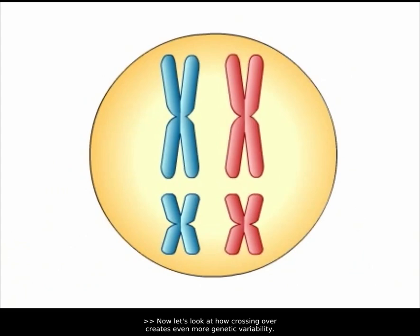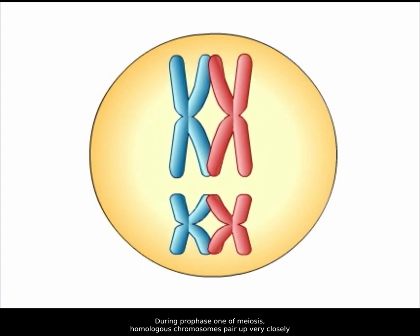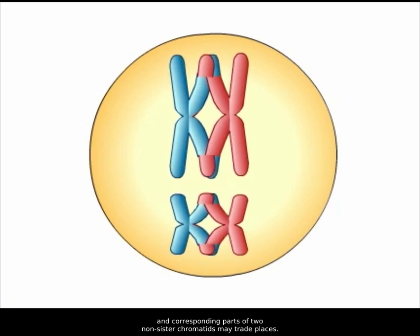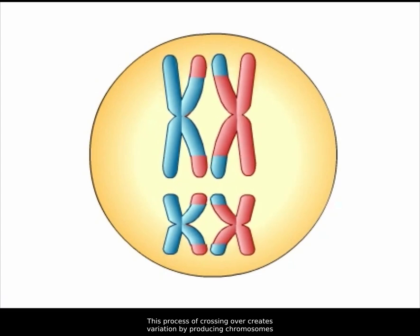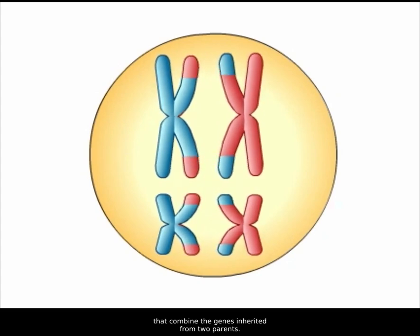Now let's look at how crossing over creates even more genetic variability. During prophase I of meiosis, homologous chromosomes pair up very closely, and corresponding parts of two non-sister chromatids may trade places. This process of crossing over creates variation by producing chromosomes that combine the genes inherited from two parents.